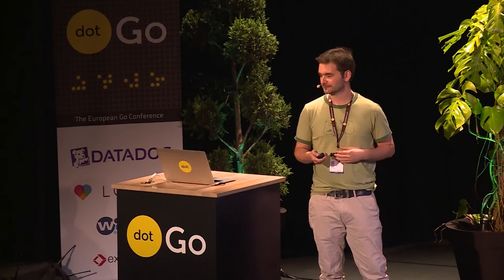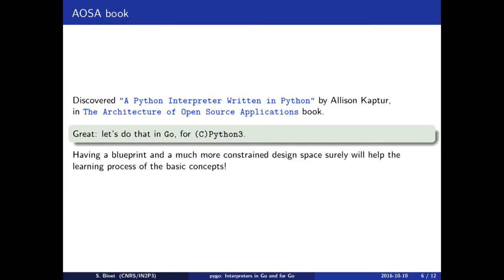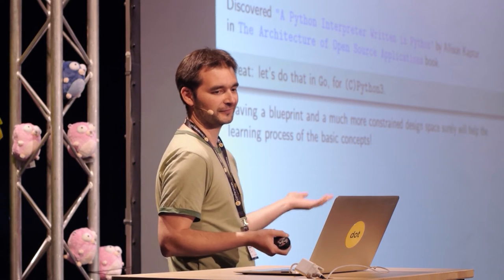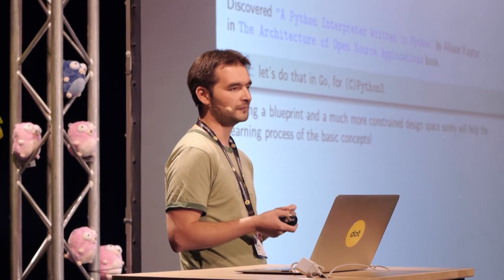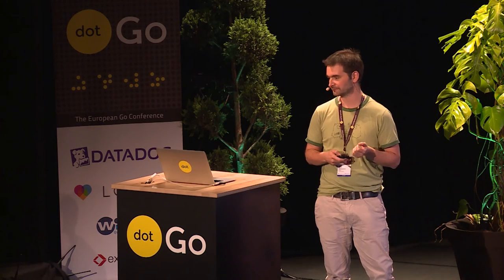What should be the format of the bytecode? Should we use LLVM, WebAssembly, or something else? It was a bit difficult. But fortunately, I discovered a couple of weeks ago a nice article by Alishan Captur in the AOSA book, which is basically a tutorial on how to write a Python interpreter for Python. And I thought, well, if I could do that for Go, in Go, but for CPython, I could learn a few things along the way.